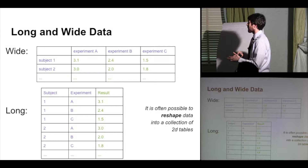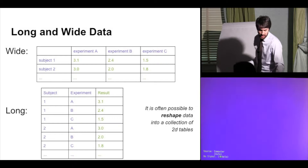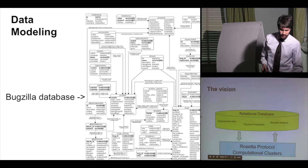Since each column is a particular dimension, doing constraints between tables is easier to express. For example, you could ask: give me all subjects who scored better for experiment C than other people. [Brief pause for a Mac power cord request from the audience.]